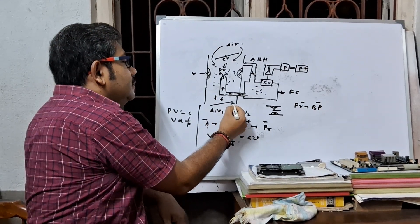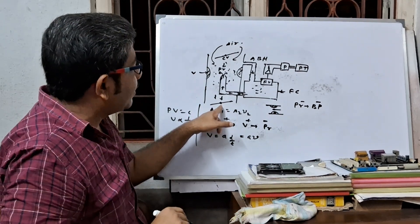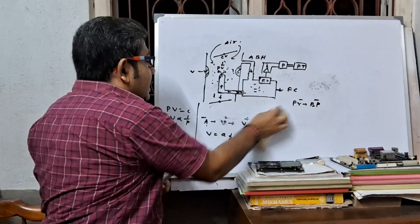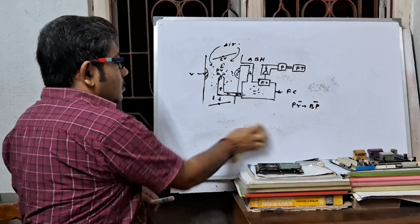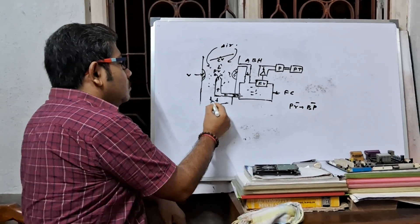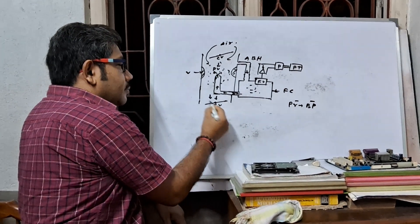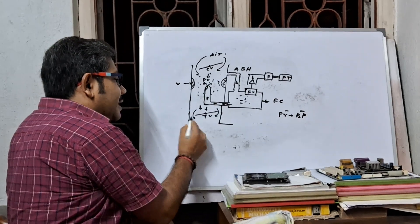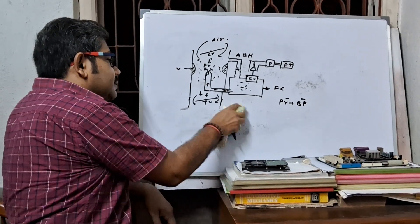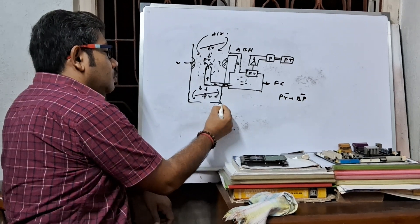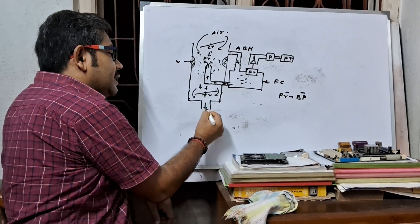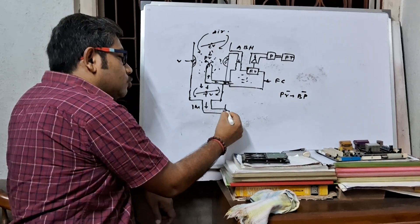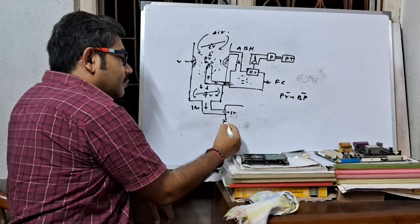The air-petrol mixture comes downward through this gap, and the amount of air-petrol mixture is controlled by the throttle valve. Look at the figure — the air-petrol mixture passes through this gap via the throttle valve.